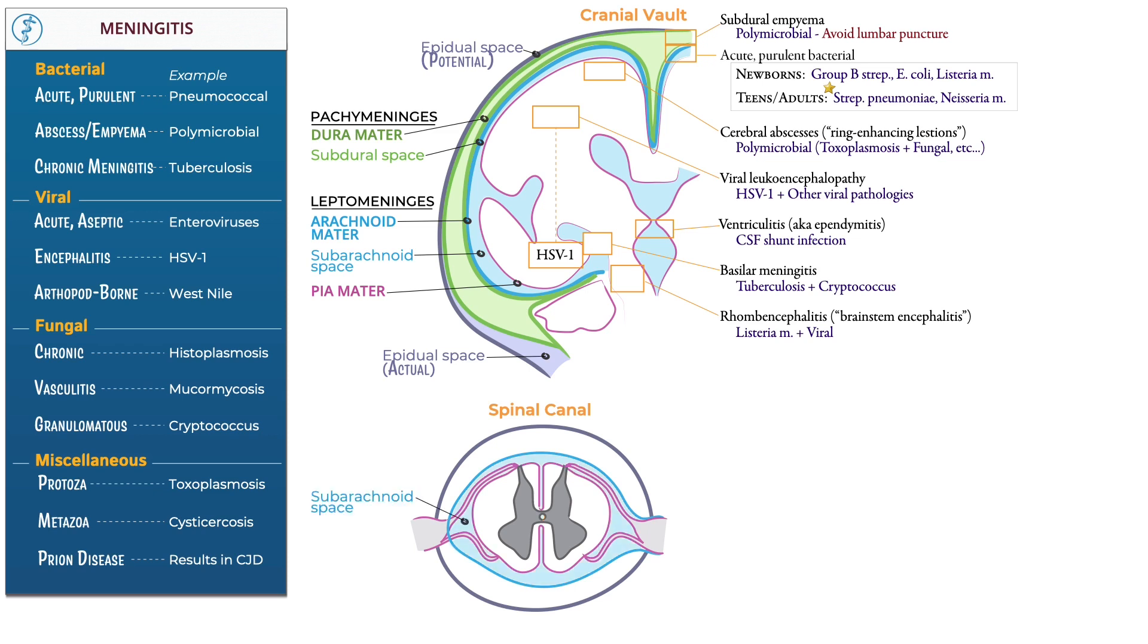Next, draw dura mater, which forms a thick ring within the spinal canal. On one side of the diagram, draw the dural root sheath, also known as the dural root sleeve. Indicate the subdural space between the dura and arachnoid mater layers. Indicate the epidural space, which forms external to the dura mater and forms an easy space for epidural abscess to form.